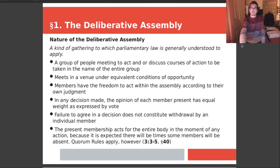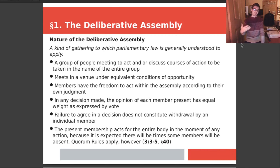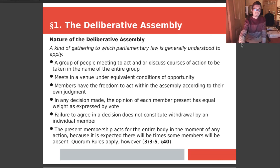Section 1 is the deliberative assembly. What is the nature of a deliberative assembly? A deliberative assembly is essentially a group that gathers to enact action on behalf of a larger group of people — for example, an entire town or an entire organization, such as Lions Club International. These are the characteristics: a group of people meeting to act or discuss courses of action to be taken in the name of an entire group.